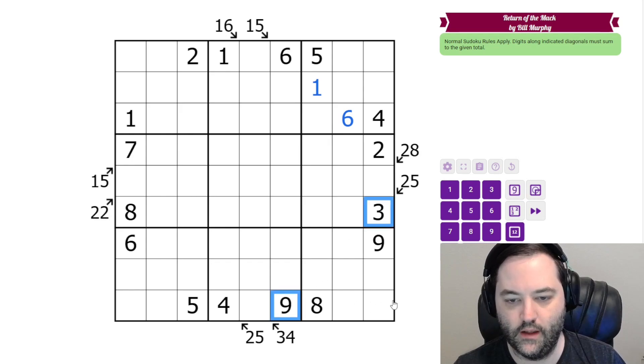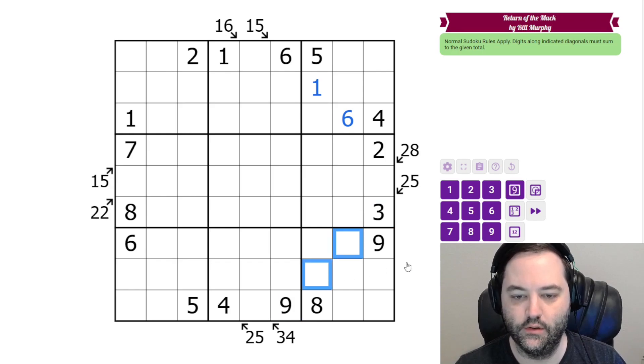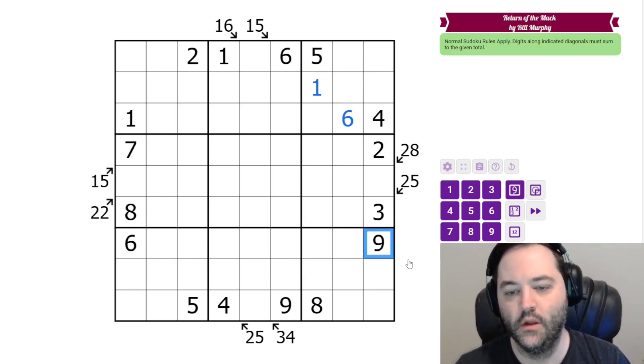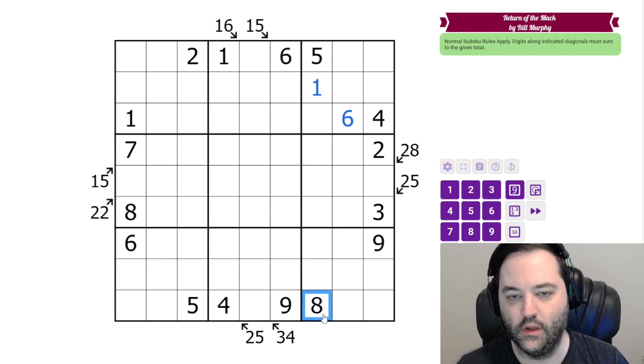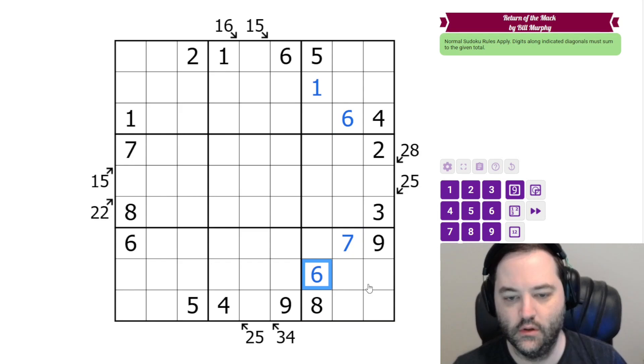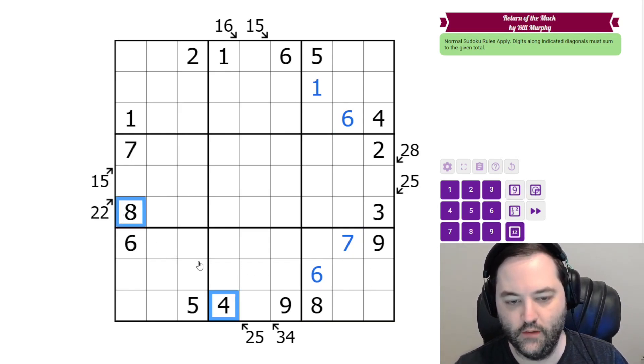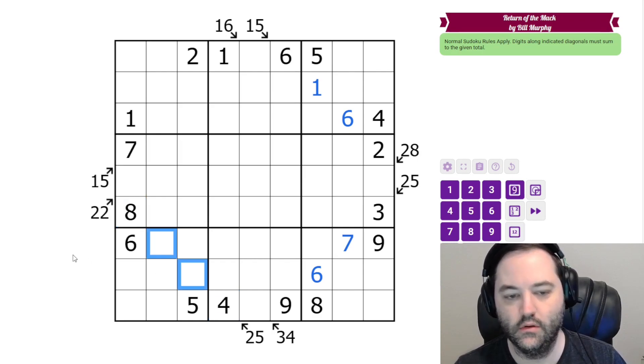All right, this 25, we already have 12 from three and the nine. So we need 13 in these two cells. We can't have four, nine. We can't have five, eight. So we must have six, seven. And that six that we placed disambiguates those. This 25 also already has 12 on it from the four and eight. So again, we need 13. We can't have five, eight, four, six, seven. So this one has to be four, nine. And then nine tells us the order.